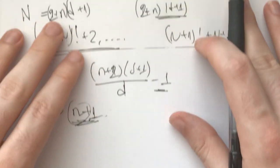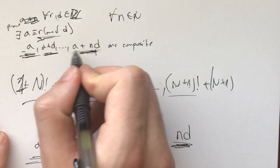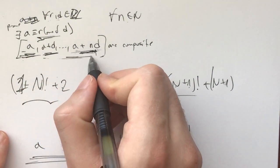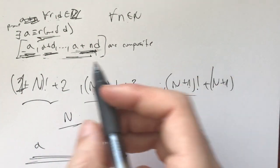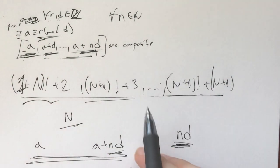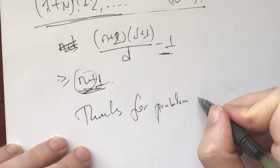And the thing I just want to show with this problem is this idea of when you have these things, like look at the bounds of what you need to be composite. If the bounds are finite, you can always use this trick and maybe adjust this trick to fit the problem that you're working on. And as always, thanks for problem solving.